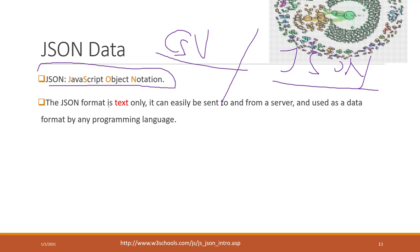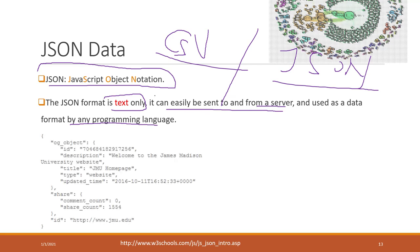JSON format is a text format that can be easily sent from a server, and it can also be used as a data format by any programming language. Here is a piece of JSON data. If you remember from our previous Python class, you'll recognize that it is actually a dictionary.